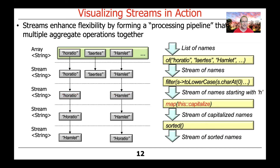The next thing we do is connect those and map them through the capitalized method reference, and what we end up with is a stream of capitalized names where we still haven't done anything with the ordering — we just have them capitalized in a consistent way. Then the last thing I'm going to show you visually is that we go ahead and sort the results with the sorted method. What comes out of that, of course, will be a stream sorted in lexicographic order.